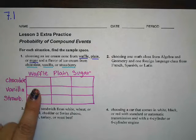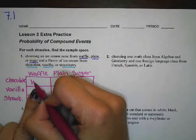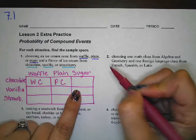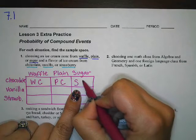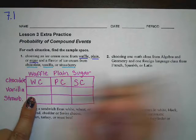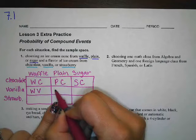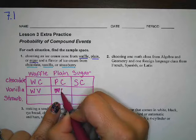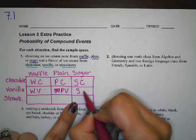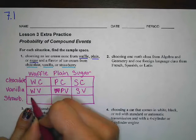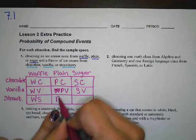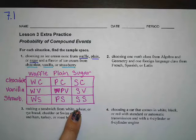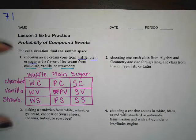So we could have a waffle cone with chocolate, a plain cone with chocolate, or a sugar cone with chocolate. Then a waffle cone with vanilla, a plain with vanilla, and a sugar cone with vanilla. Finally, a waffle cone with strawberry, a plain cone with strawberry, and a sugar cone with strawberry. Those are all our different outcomes — that is our sample space.